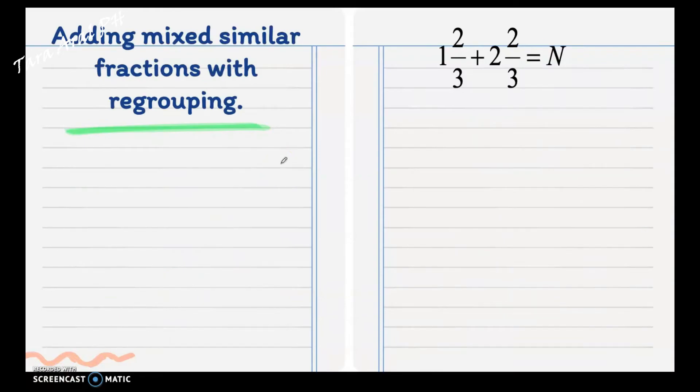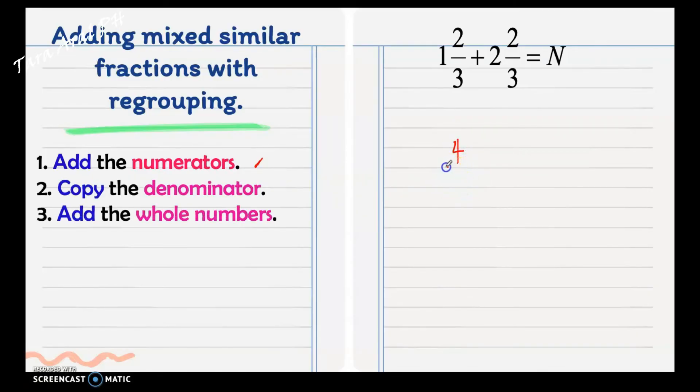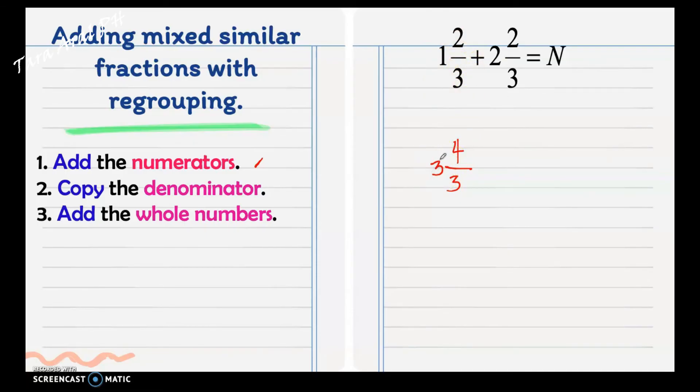Adding mixed similar fractions with regrouping. We have here the steps. Add the numerators. We have 2 plus 2 is 4. Then, copy the denominator, which is 3. And, add the whole numbers. Since this is a mixed number, we have 1 plus 2 is 3. As you can see, the numerator is greater than the denominator. Then, we need to regroup by changing the fraction to proper fraction or mixed number.